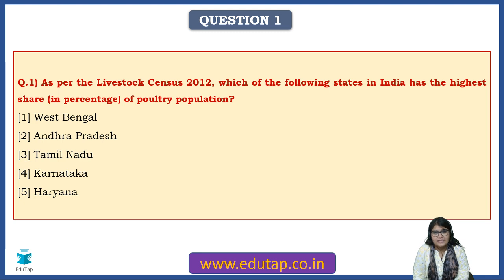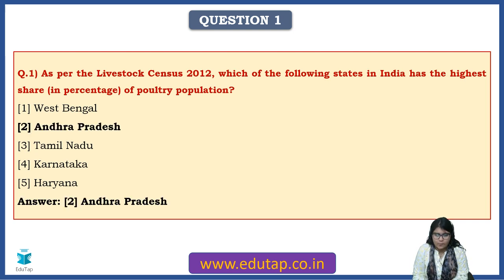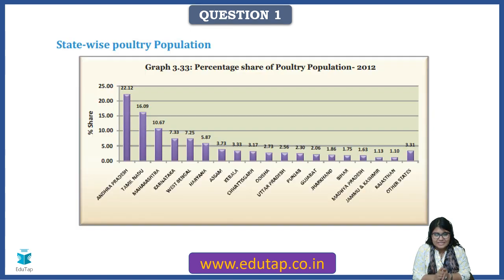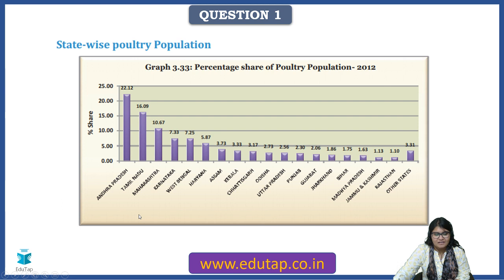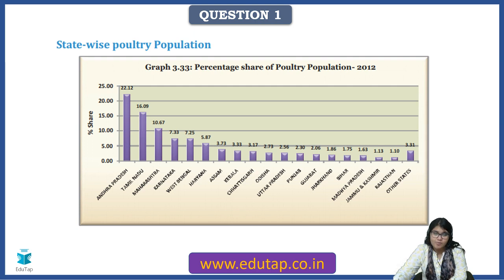First question: as per the livestock census 2012, which state in India has the highest share in percentage of poultry population? The answer is Andhra Pradesh. You can see the bar diagram showing Andhra Pradesh leading the chart, followed by Tamil Nadu and Maharashtra. Basically, the southern and western states take the lead in poultry population share. Keep this in mind — it can be a probable exam question.